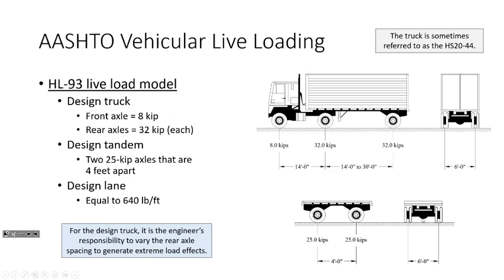The distance between the first two truck axles is fixed at 14 feet. The distance between the two rear axles is variable, from 14 to 30 feet. However, the vast majority of analyses will use the minimum distance of 14 feet — if you want worst-case bending, you lump those loads together rather than spread them apart. To generate worst-case response it makes sense to use 14 feet, not 30 feet.